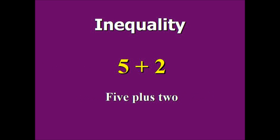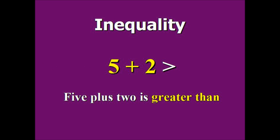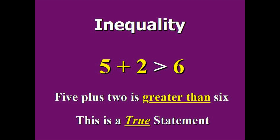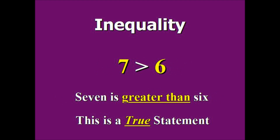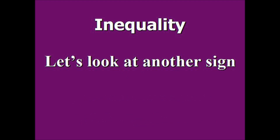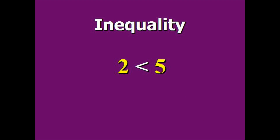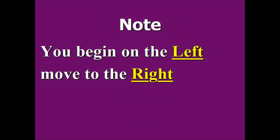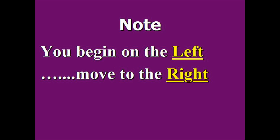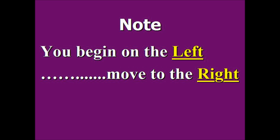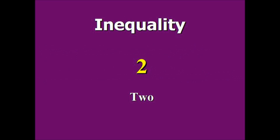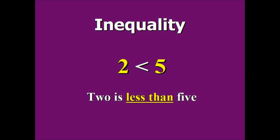So you have 5 plus 2 is greater than 6. This is a true statement because 5 plus 2 equals 7, which is greater than 6. Now, 2 is less than 5. We have our less than symbol — we know it's less than because as we move from left to right we hit the lesser end first. So 2 is less than 5. This is a true statement.